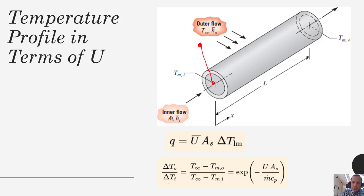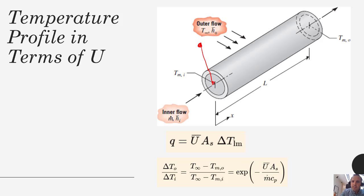We can also express the temperature profile in this way. This equation gives us the outlet temperature, which can be expressed in terms of U but also in terms of T∞ rather than just the surface temperature, with the external temperature T∞ appearing in that equation.